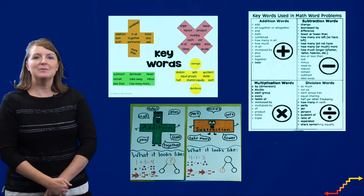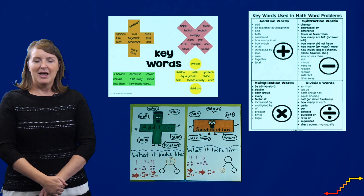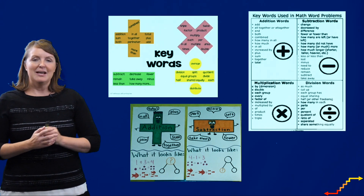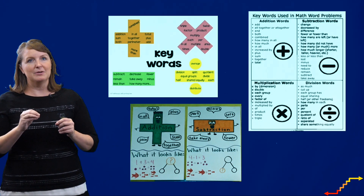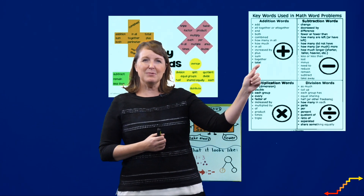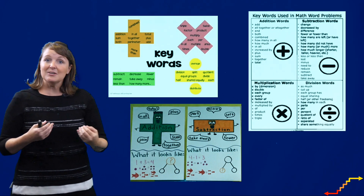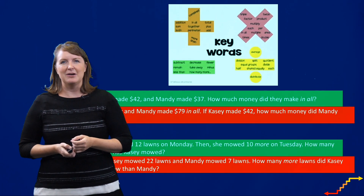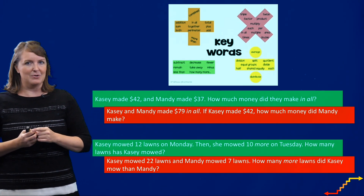Here are some examples of key word posters that you might see in teacher classrooms. What students end up doing, especially students that have learning difficulties, is they start to play a matching game between a word and the operation. So for example, I see the word 'total,' and what's really close to the word total is a plus sign. So students are signaled that every time they see 'total,' they're just going to add numbers together. And sometimes that works, but sometimes that doesn't work.